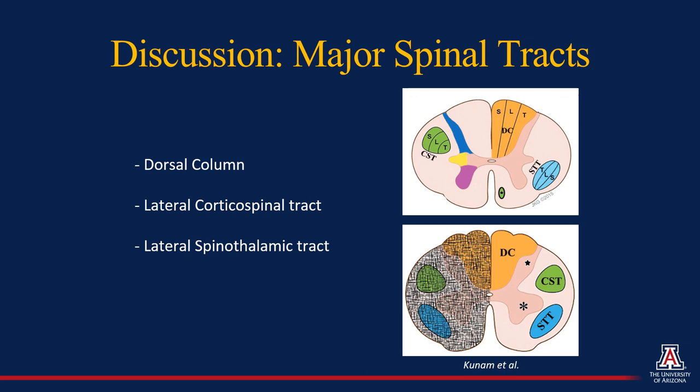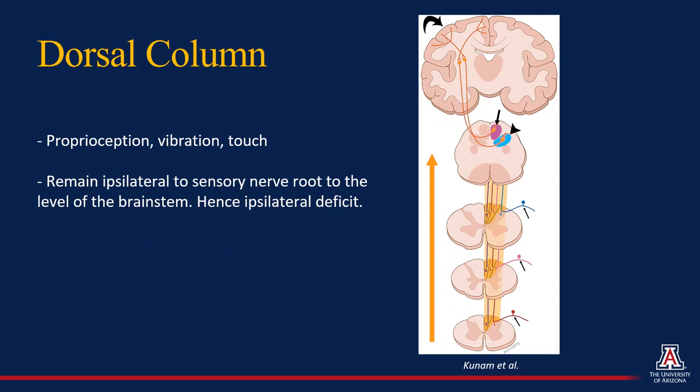This brings us to a discussion of the major spinal tracts, three of which will be discussed here as they relate to Brown-Séquard syndrome. These include the dorsal column, the lateral corticospinal tract, and the lateral spinothalamic tract. The dorsal column is a white matter tract responsible for proprioception, vibration, and fine touch. These fibers remain ipsilateral to the nerve roots from the level of the nerve root to the brainstem; hence, if they are transected, there will be an ipsilateral deficit.